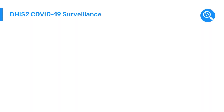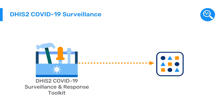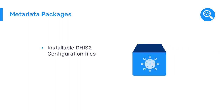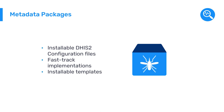Countries were able to rapidly deploy these systems by using the DHIS-2 COVID-19 Surveillance and Response Toolkit, which included implementation guidance, training material, and DHIS-2 metadata packages. Metadata packages are installable DHIS-2 configuration files that allow countries to fast-track their implementation of DHIS-2 for specific health programs by starting from installable templates instead of a blank slate.